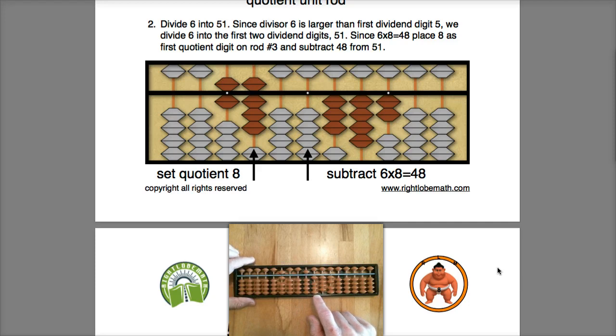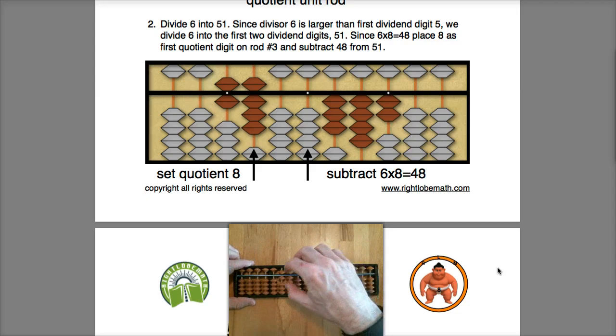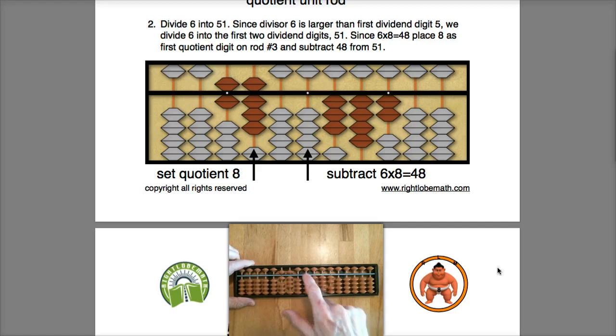All right, well 6 times 8 is 48, so I'll subtract the 48 from the 51 with a remainder of 342 on the dividend.